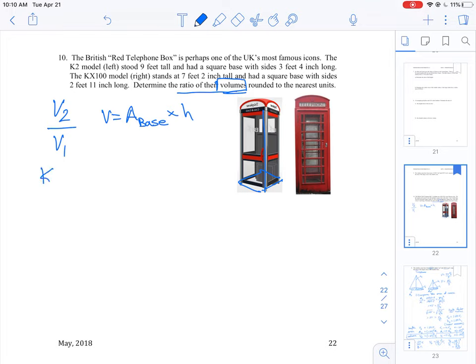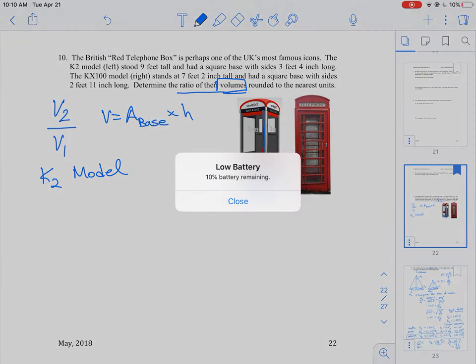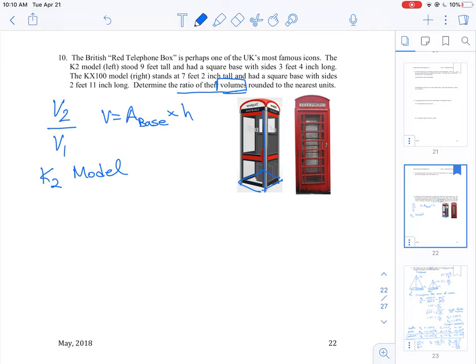So let's just look at the models here. So the first one here is the K2 model. It stands nine feet tall and has a square base with sides three feet four inches long. So the area of the base is going to be three feet four inches, but we have to square that and then the height is equal to nine feet.